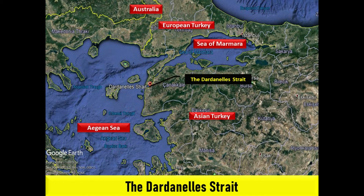The Dardanelles, also known as the Strait of Gallipoli, is a narrow, natural strait and internationally significant waterway in northwestern Turkey that forms part of the continental boundary between Europe and Asia, and separates Asian Turkey from European Turkey. One of the world's narrowest straits used for international navigation, the Dardanelles connects the Sea of Marmara with the Aegean and Mediterranean Seas, while also allowing passage to the Black Sea via the Bosphorus. Together with the Bosphorus, the Dardanelles forms the Turkish Straits.